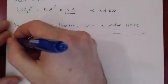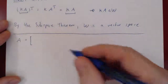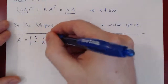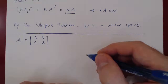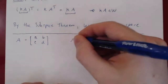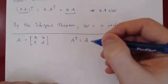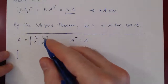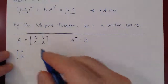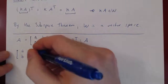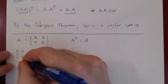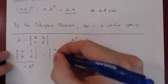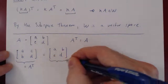Consider a general 2 by 2 matrix A with unknown entries a, b, c, d. The matrix A is in W if it satisfies A transpose equals A. The transpose of A is the matrix with rows and columns swapped, so A transpose has entries a, c in the first row and b, d in the second row. Setting A transpose equal to A, we compare corresponding entries.